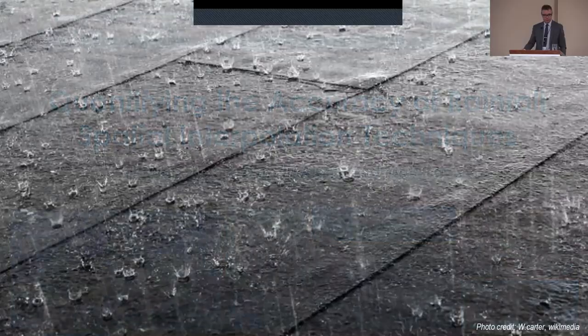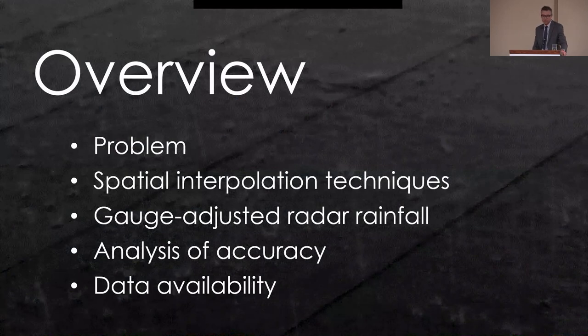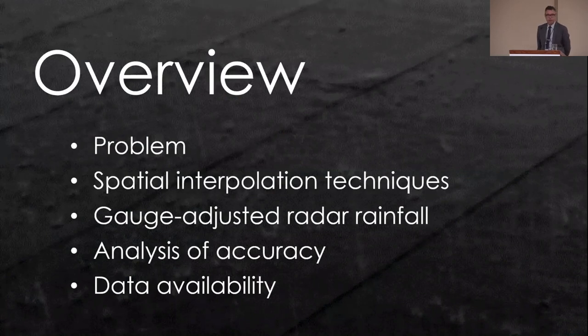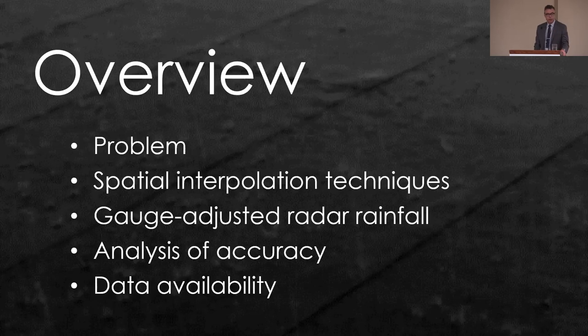Nathan has been modeling natural systems and urban infrastructure for more than 20 years and is keenly focused on new advances in data science and decision support to address climate change risks and vulnerabilities. Today we're going to talk about rainfall. First, we'll cover the problem and why rainfall is important, then spatial interpolation techniques, then gauge-adjusted radar rainfall, then accuracy using the leave-one-out method, and finally data availability.